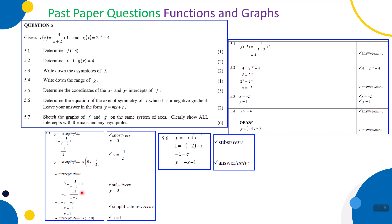For the y-intercept, make x = 0. So y = -3/(0+2) + 1, which gives y = -1/2. The y-intercept is at (0, -1/2). You get a mark for setting x = 0, a mark for y = -1/2, a mark for setting y = 0, a mark for the simplification, and a mark for x = 1. That's your five marks.